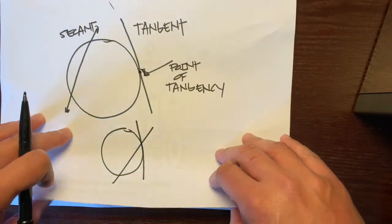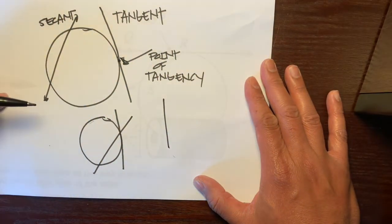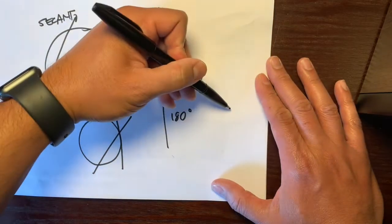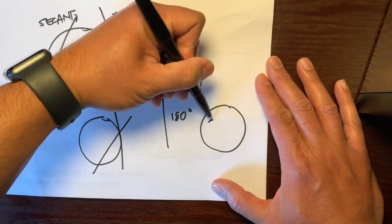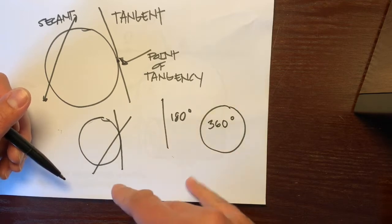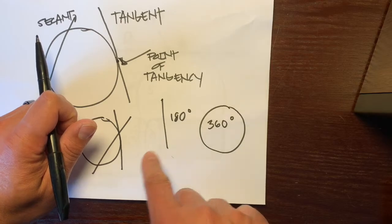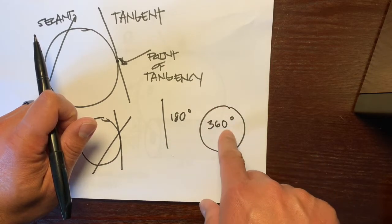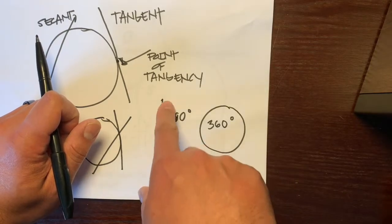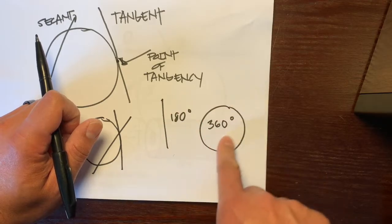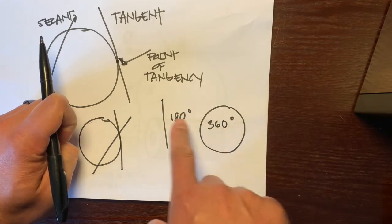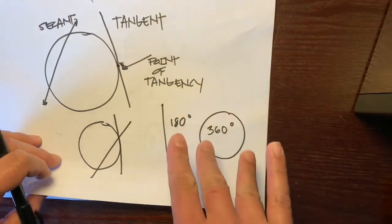The big thing to know is that a line — just your regular old line — is 180 degrees, as in a straight angle. And a circle is 360 degrees. Look at this ratio: the ratio from a line to a circle is 2 to 1. That means the measurements of the circle are twice as much as the measurements of a line, or the measurements of a line are half the measure of the circle. So twice when going from line to circle, or half when going from circle to line.